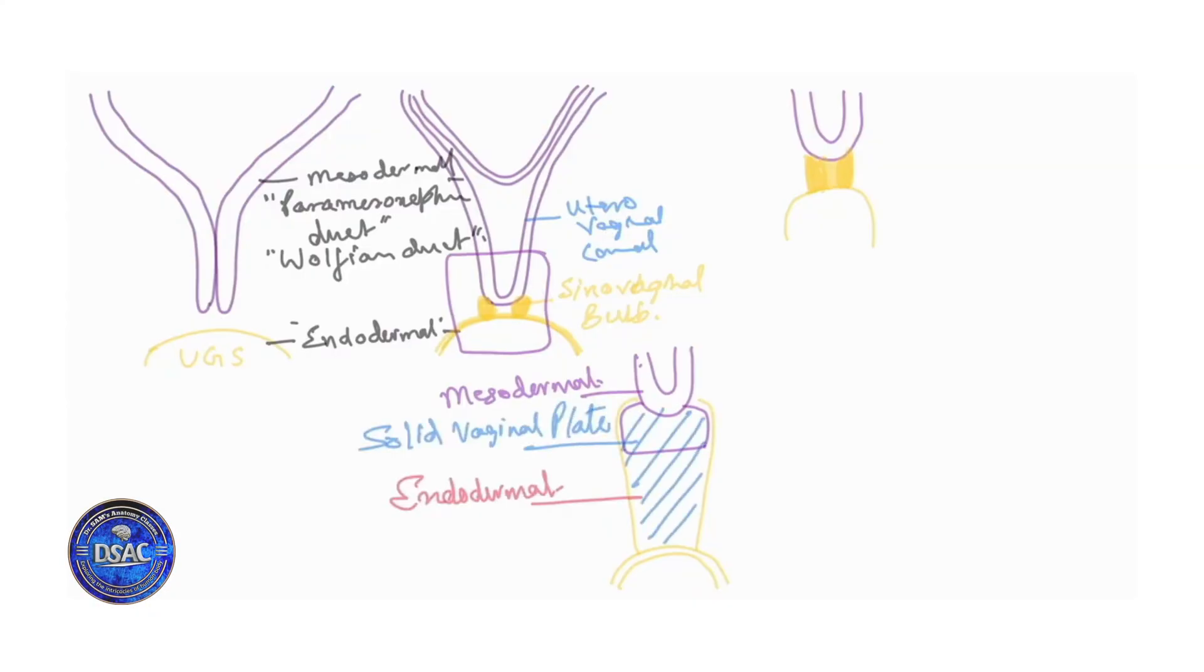Later on this vaginal plate gets canalized. So in the end what you find is this uterovaginal canal itself gets canalized and it opens here at this internal os to form this cervix. As I told you before the part of this mesodermal thickening from the uterovaginal canal it extends in upper one-third of the vagina. But this vaginal plate continues to form the lining of the vagina in the lower two-third and where it was joining this fundus of this urogenital sinus here also it gets perforated so as to form an opening.